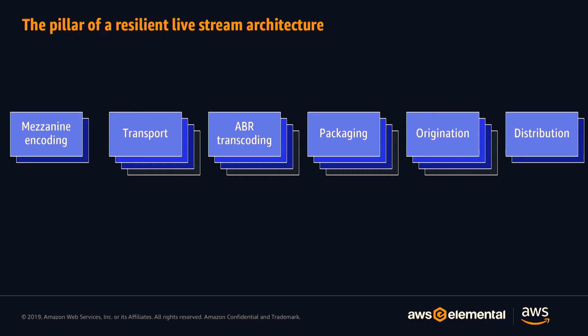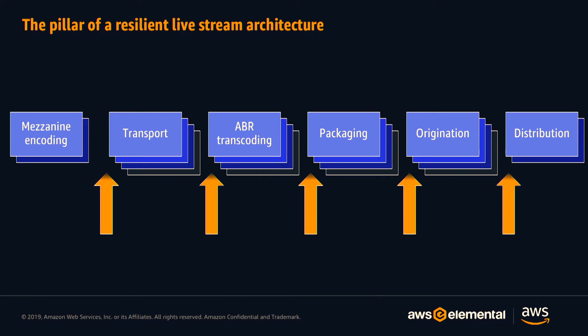Instead of switching between entire legs, think about failover within individual steps. There were talks yesterday looking at the concept of micro-services — it's not quite that far — but if you look at the individual steps along that workflow and think of failover between each individual step, you can build something that's a lot more resilient and reliable than a traditional A and B leg workflow where failover is essentially just switching between one and the other.